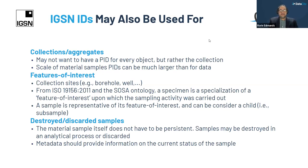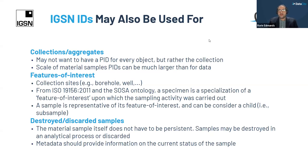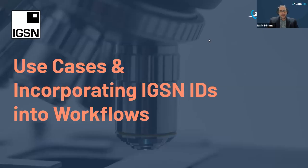The material itself doesn't have to be persistent. We know that samples can be destroyed during the analytical process or might be thrown away. So IGSN IDs can be used for those kinds of samples as well. The metadata connected with that sample should provide information on what the current status of the sample is.